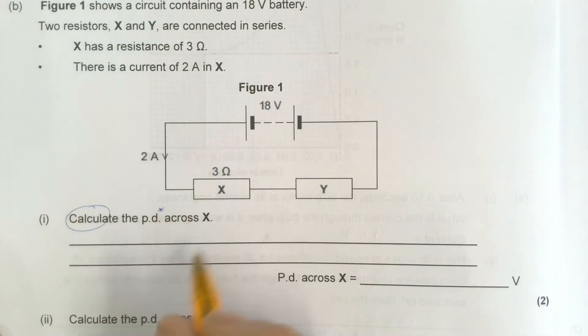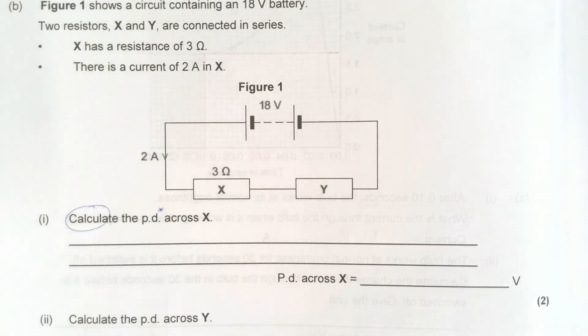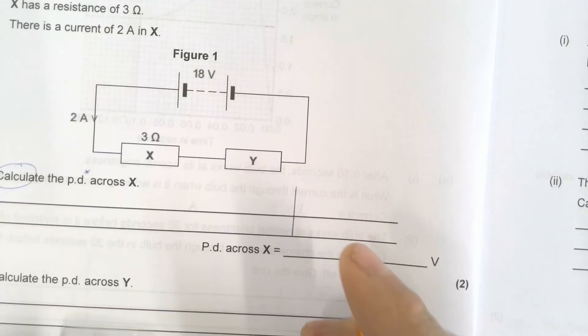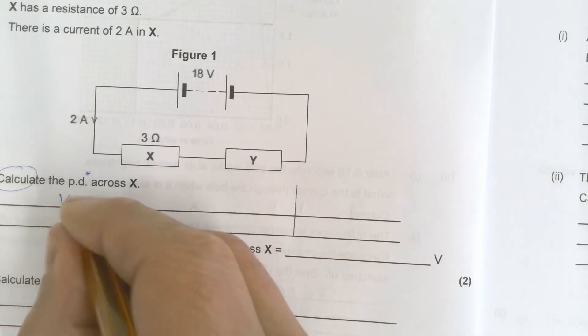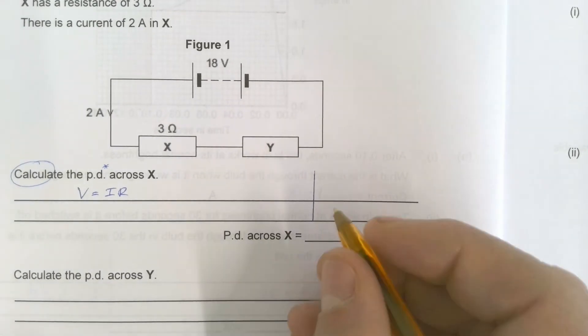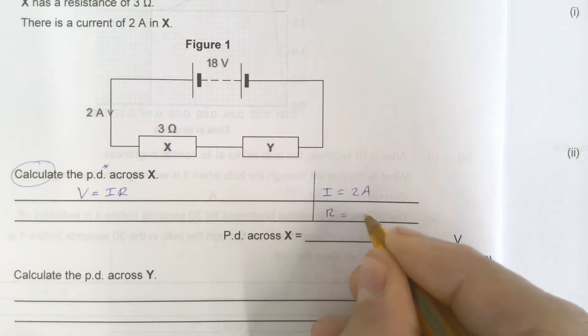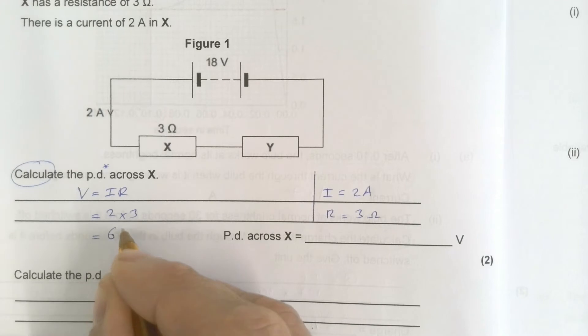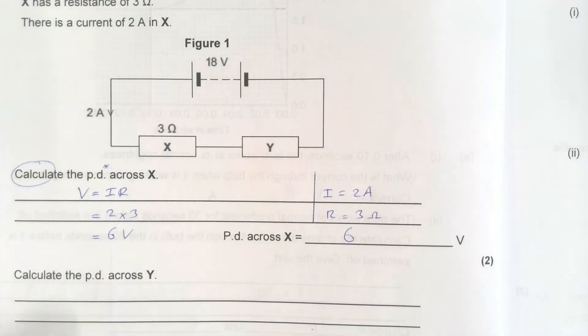We're looking for the PD across X. What values do I know? So what do I know? I know that I want V is equal to I times R. I know that I is equal to 2 amps. I know R is equal to 3 ohms. So 2 times 3 equals 6 volts. 6 volts. Okay, nothing particularly difficult there.